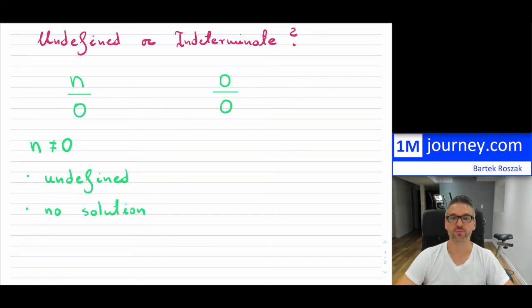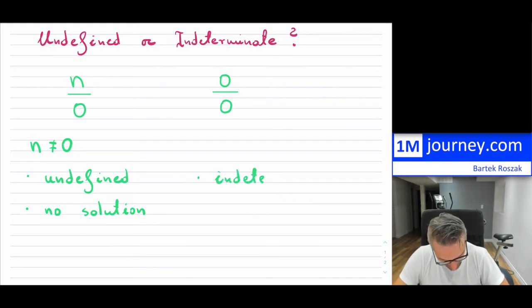On the other case, when you run into 0 over 0, this is called indeterminate, meaning we cannot actually determine what the answer could be.